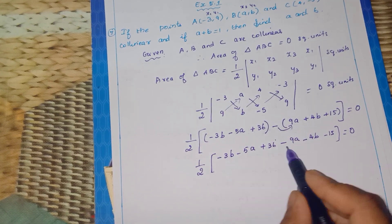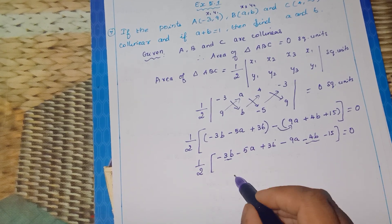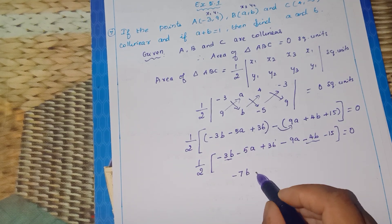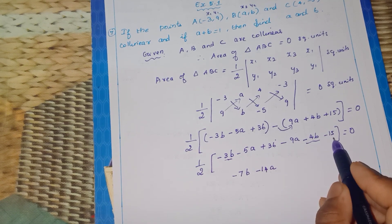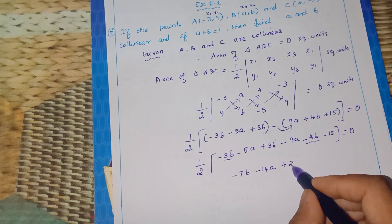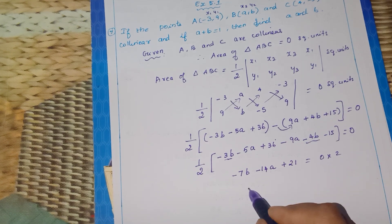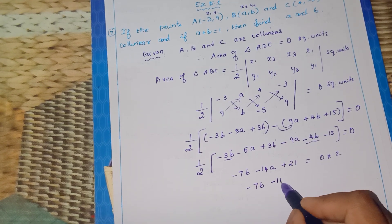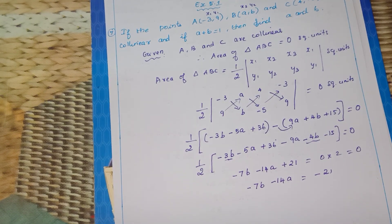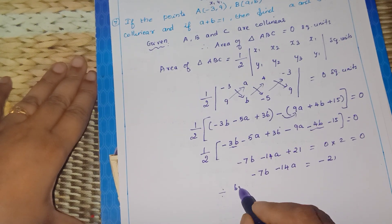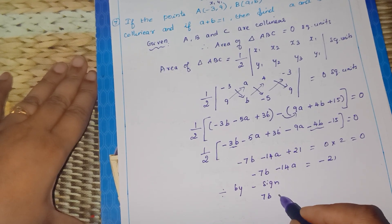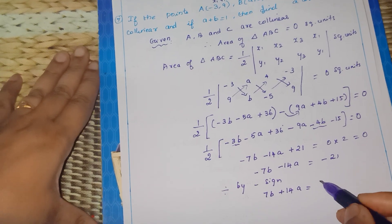Collecting like terms: -3B - 4B gives -7B, and -5A - 9A gives -14A, plus 36 - 15 gives +21. So: half into (-14A - 7B + 21) = 0, which gives -14A - 7B = -21. Dividing by -7: 2A + B = 3.